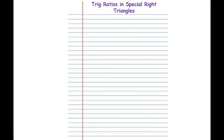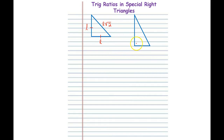Next page: trig ratios in special right triangles. You have your 45-45-90 triangle — the legs are both the same and the hypotenuse is equal to leg times root 2. And you have your 30-60-90 triangle. The short leg is S, the long leg equals S times root 3, and the hypotenuse equals 2S.